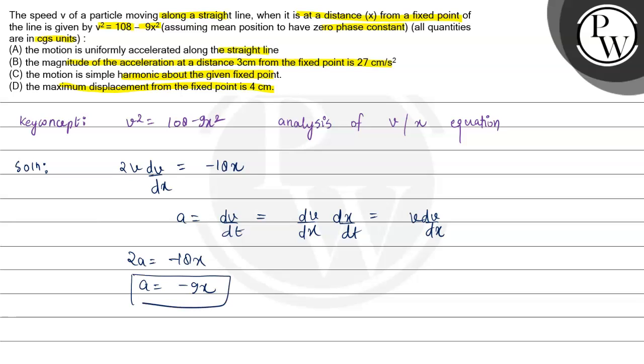If acceleration is directly proportional to -x, this is the SHM equation. Here we have the SHM equation, so option C would be correct.